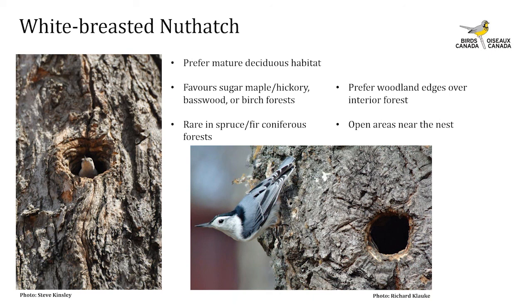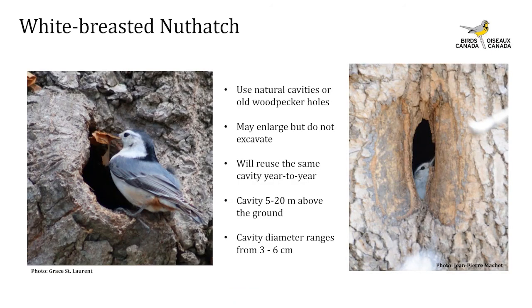White-breasted nuthatches seem to favor sugar maple, hickory, basswood, or birch forest compositions, and favor woodland edges over interior locations, often near open areas, water, roads, or clearings. They begin laying eggs in mid-April and incubate until early June; the short young period runs from late May to late June. They use natural cavities or old woodpecker holes — may enlarge the existing hole but do not excavate on their own. They often reuse cavities year after year, with the location varying from 5 to 20 meters above ground and cavity entrance 3 to 6 cm in diameter.